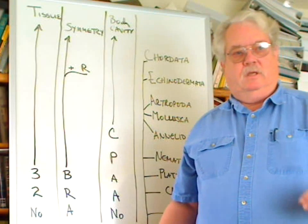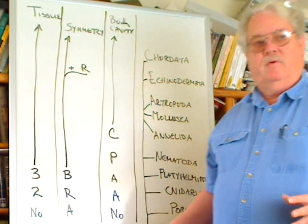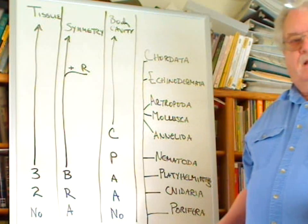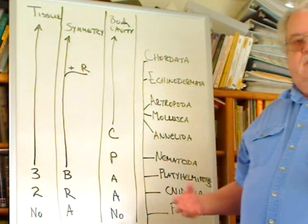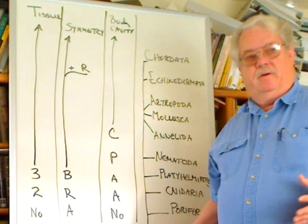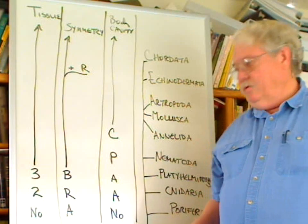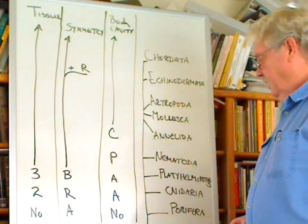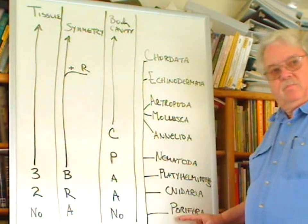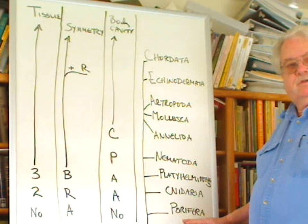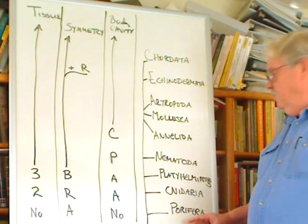Let's take a little while just to look at the different animal phyla and how these three main characteristics relate to them. We have, of course, the Porifera, which are the sponges.